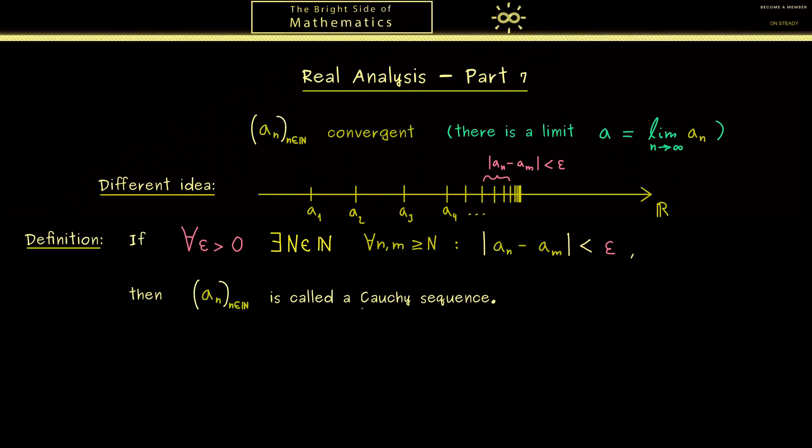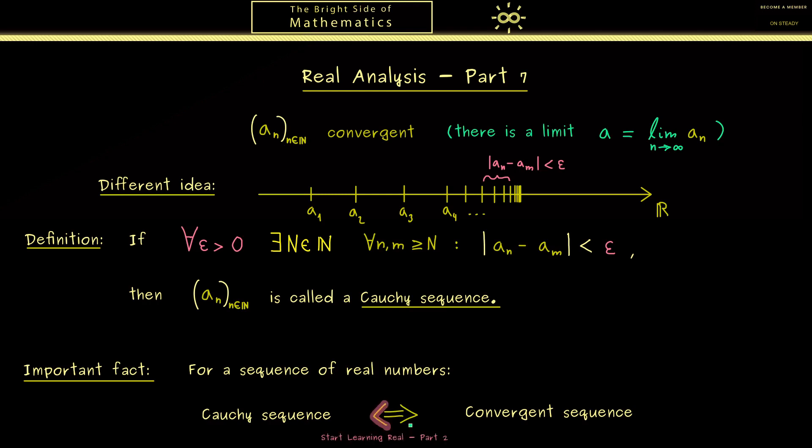This is exactly the definition you might have already seen in my start learning real series. There I also showed you the important fact that for a sequence of real numbers we have that being a Cauchy sequence is equivalent to being a convergent sequence. The proof of this direction you can see in part 2 of the course. And the other one is exactly the completeness axiom.